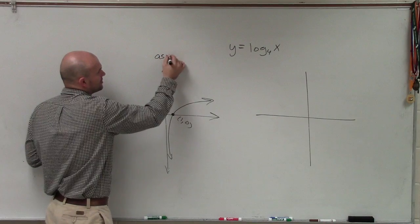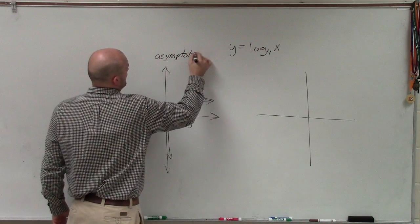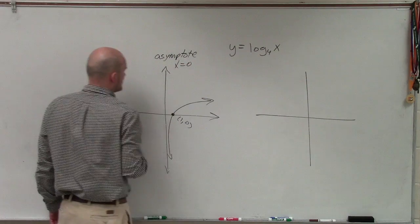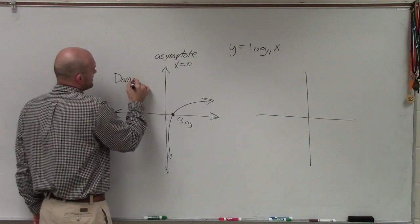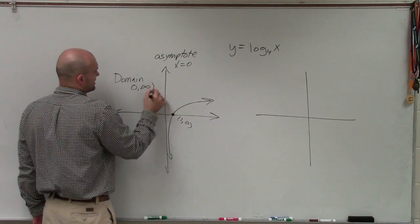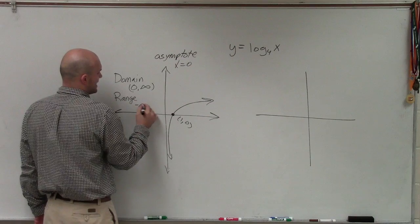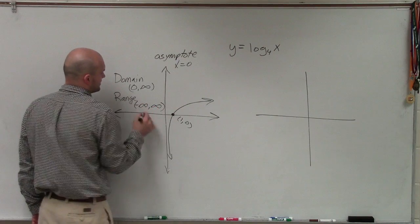It's going to have an asymptote at x equals 0. So therefore, the domain of our parent graph is going to be from 0 to infinity, and the range is going to be from negative infinity to infinity.